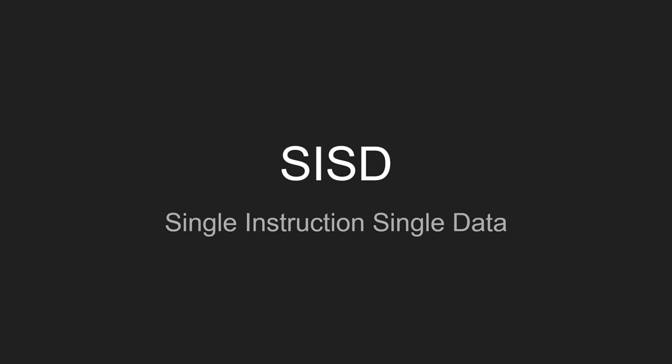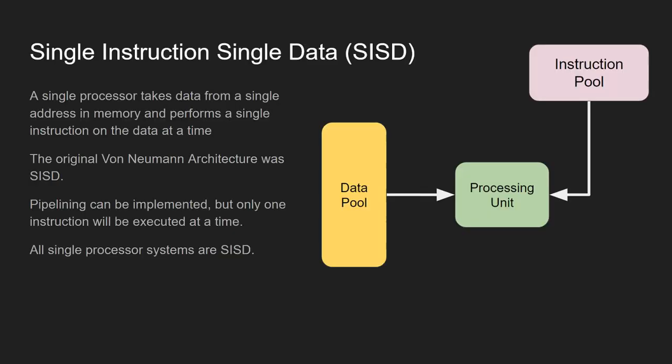Let's start with the simplest of them, which is SISD — single instruction, single data. This is based around the original von Neumann architecture. A single processor takes data from a single address in memory and performs an instruction on that data, one piece of data at a time, going from instruction to instruction. You can implement pipelining with SISD, but you can still only execute one instruction at a time, even though individual instructions might be at different stages. All single processing systems are SISD.